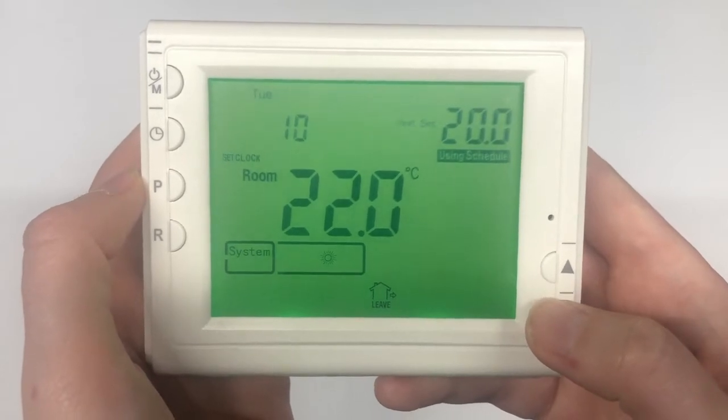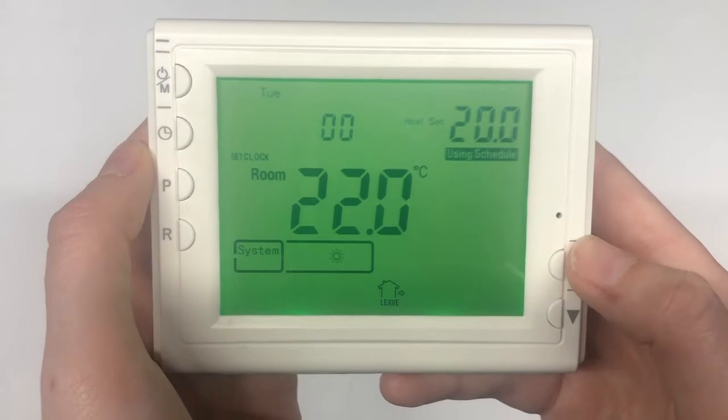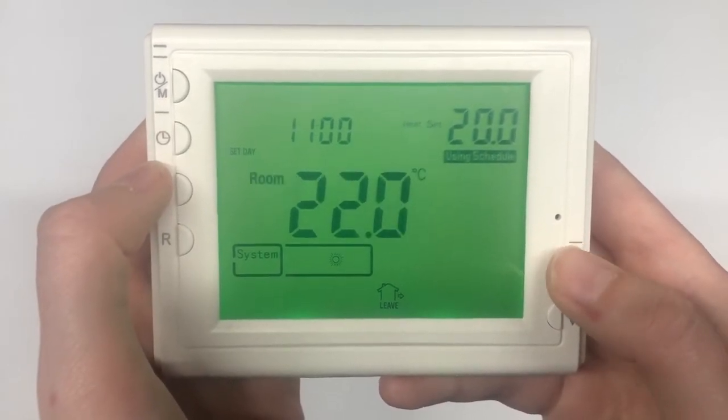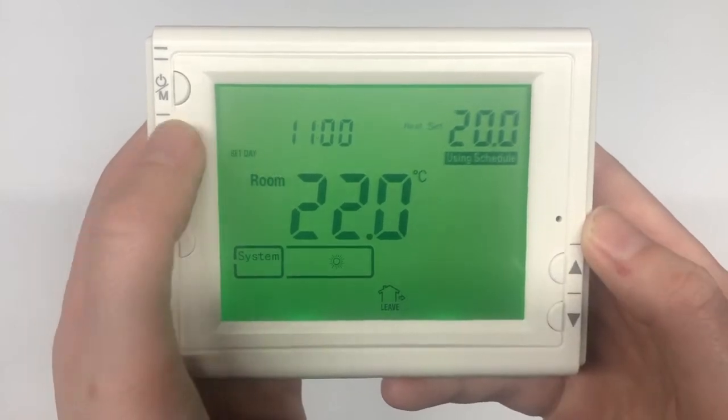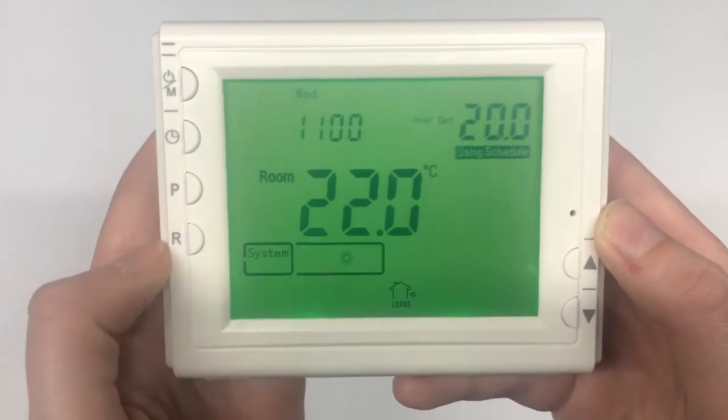It is actually 11 on Wednesday. Just use the button to toggle between each field and the arrow keys to select the correct time and day. When that's done, click R to save it and return to the menu.